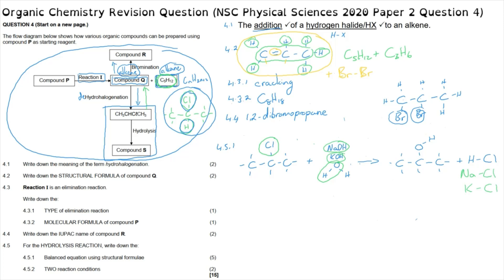Question 4.5.2 asks us to identify the reaction conditions for this specific hydrolysis reaction. There are a number of options: the first is that mild heat is required; the second is that a diluted strong base must be present, or water, depending on which reactant was chosen. Those are the conditions for this reaction.